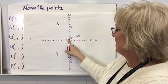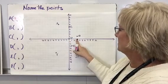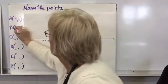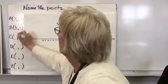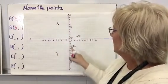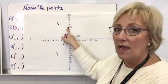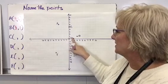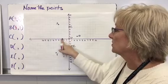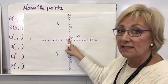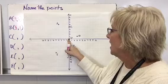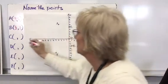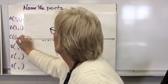If I look at B, I've gone over three in a positive direction and one up in a positive direction, so the coordinates are (3, 1). For C, the point is lined right on the y-axis — it didn't go left or right, so x is zero. It went straight up five units in a positive direction, so C is (0, 5).